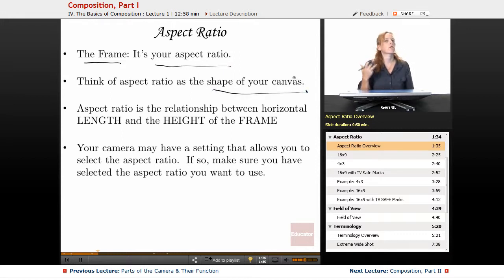Every time a painter paints, there are standard shapes for their canvas. Sometimes they make their own canvases to be a size and shape that they want, but that is technically the aspect ratio of the image they're making. Technically, aspect ratio is the relationship between the horizontal length and the height of the frame.